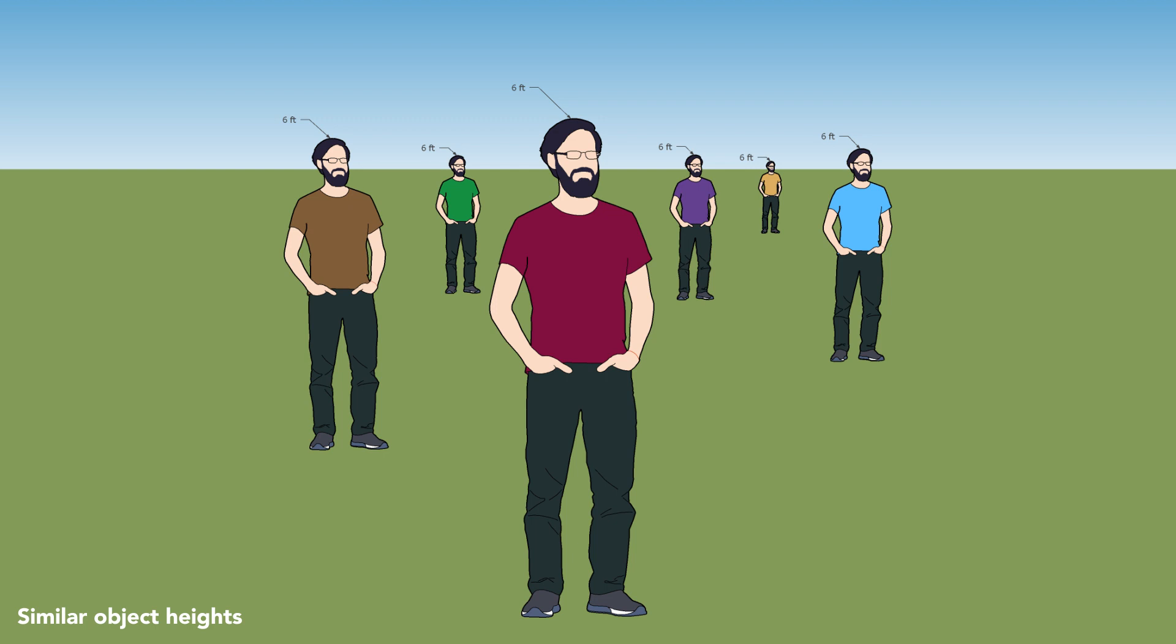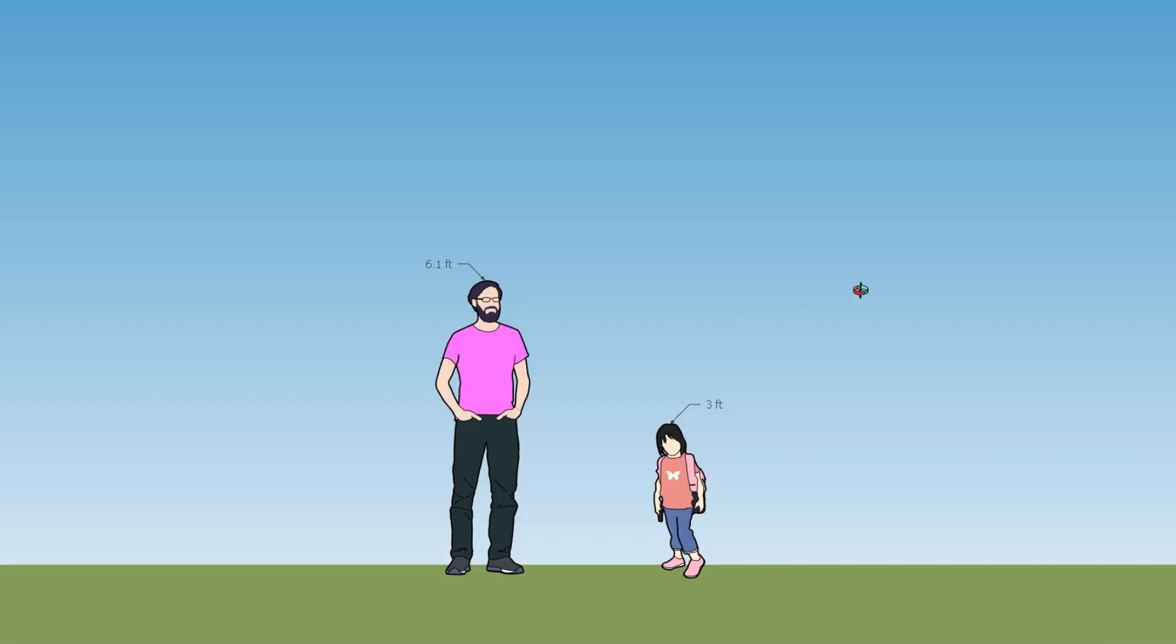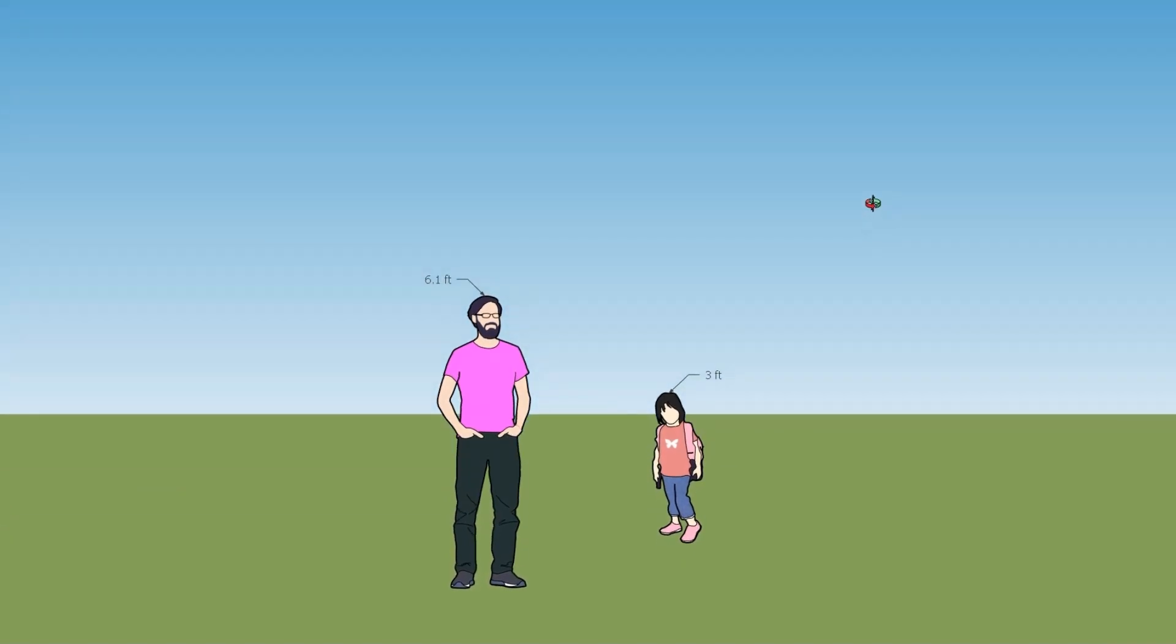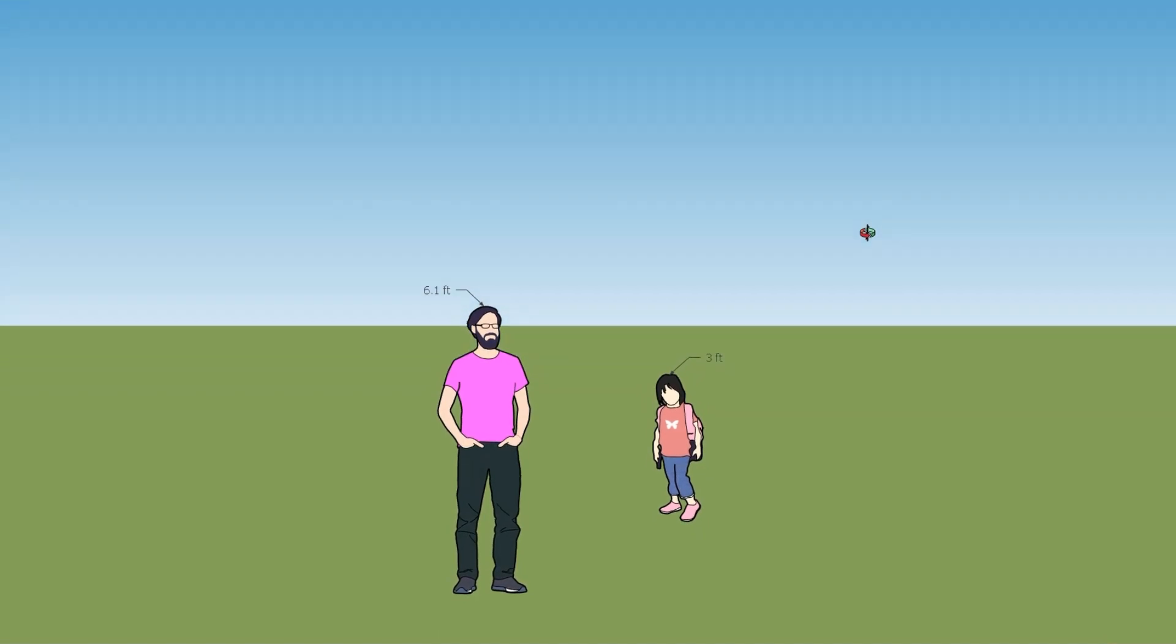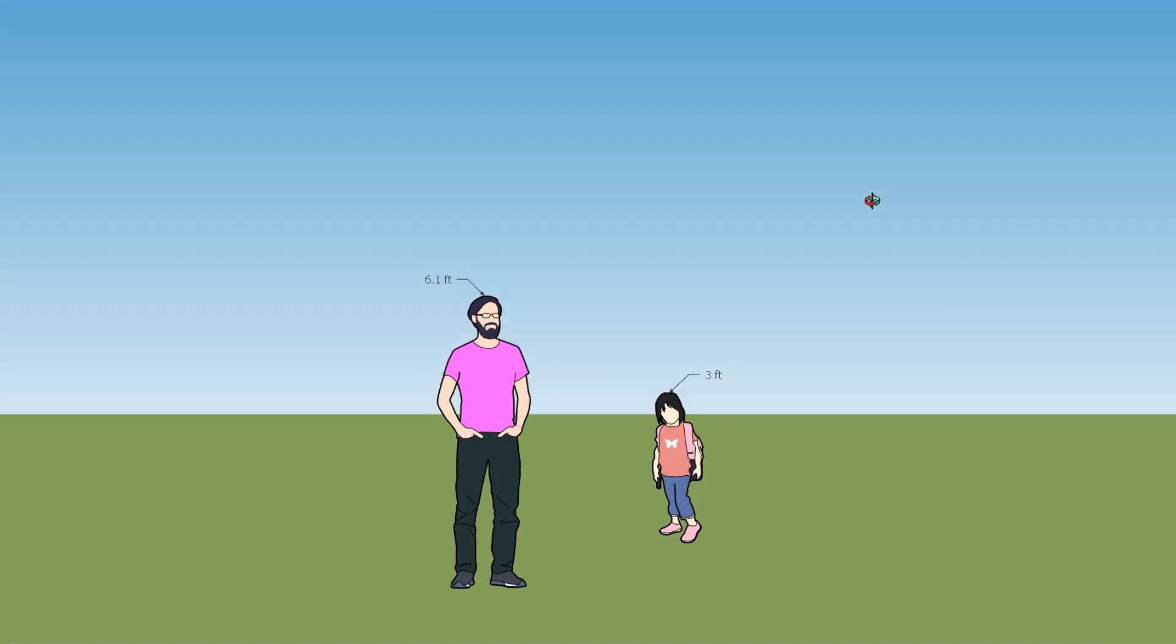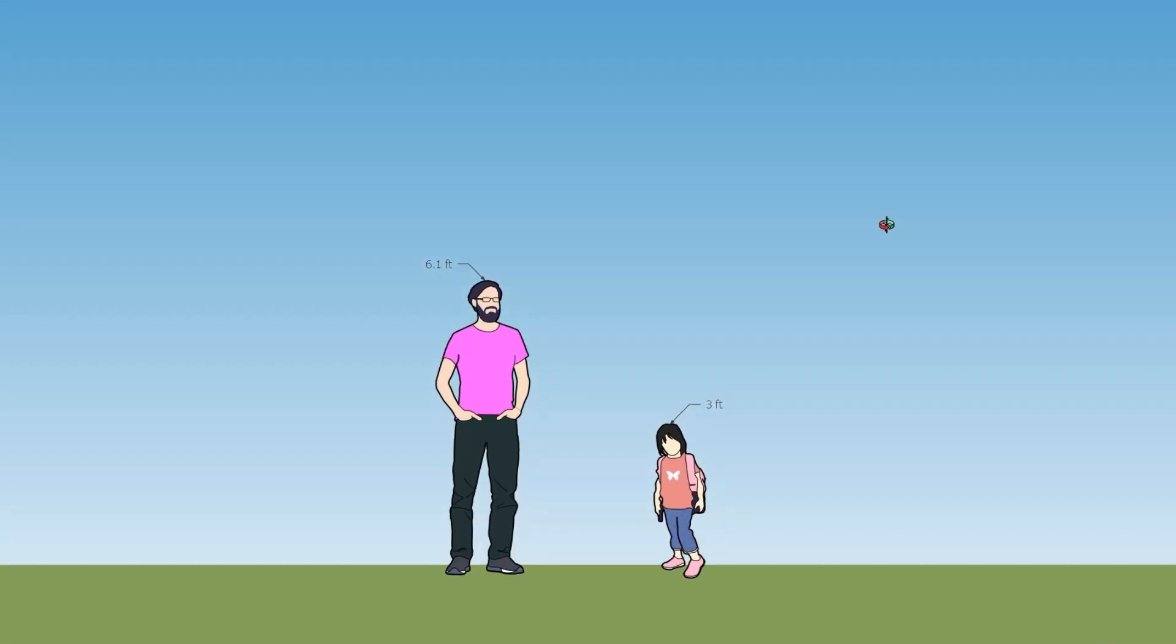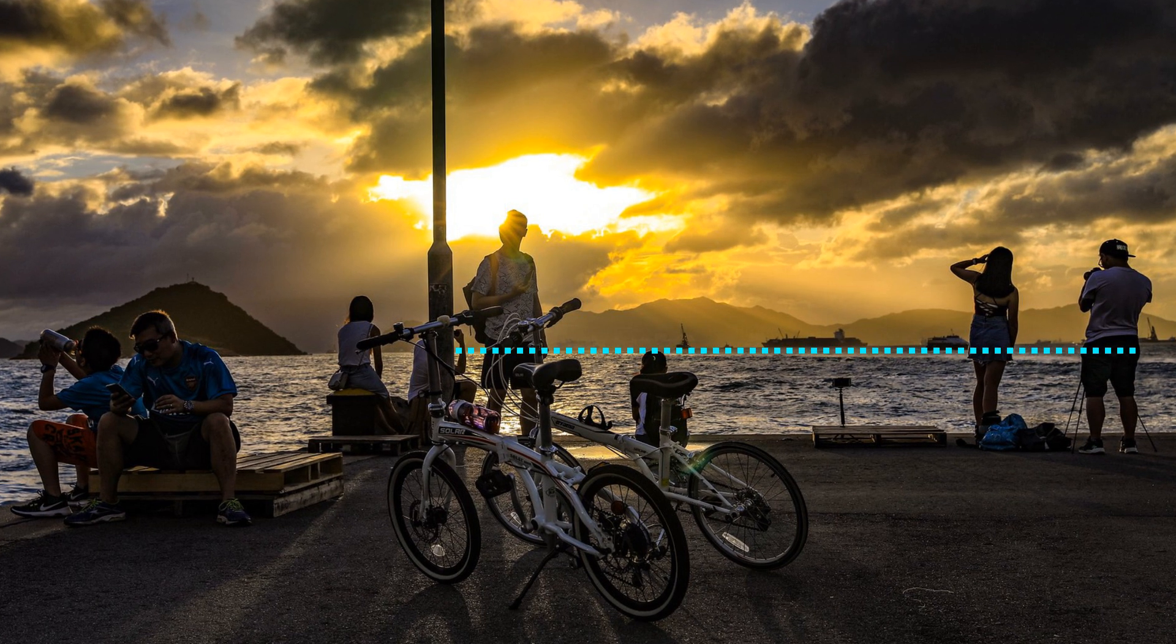But what if the objects have a big difference in height? A great example for this is an adult and a kid. Do you think they will have the same body part alignment? Well, let's take a look. As I move up the camera, the eye level also moves up, but the upper part of their body is not lining up, and this is because they have a very big difference in height. But as I move the camera down, their lower body part, which is the knees and the feet, line up with the eye level. Here are some examples applying the second rule.